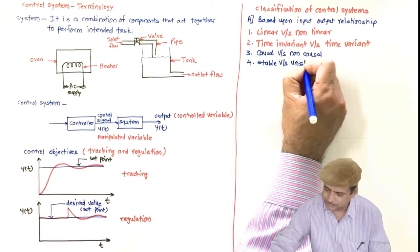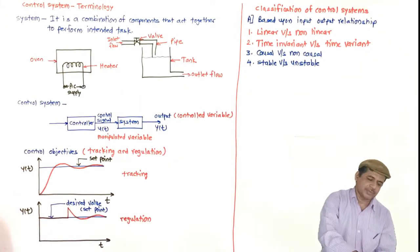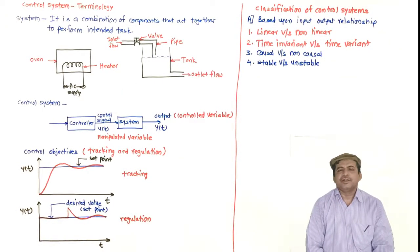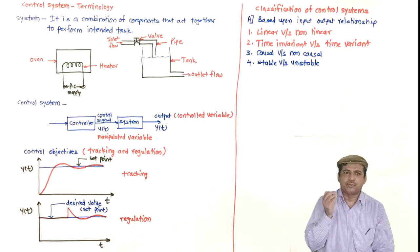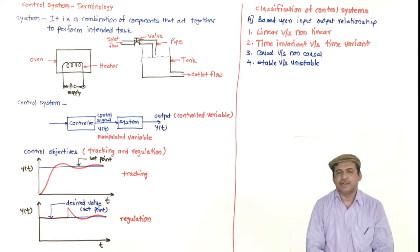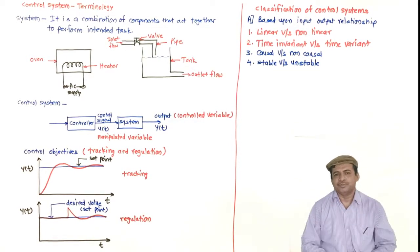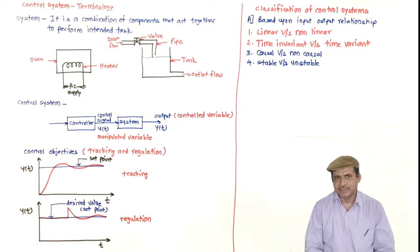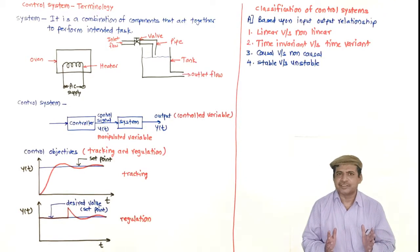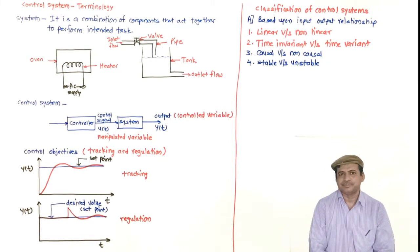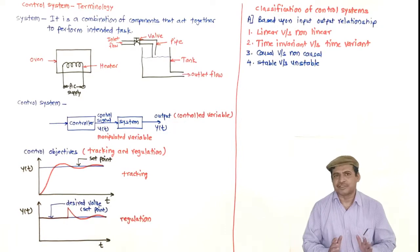Non-causal systems are not physically realizable. The next property concerns stability. A system is said to be stable if it produces a bounded output for every bounded input. It means that if we apply a bounded input — one with finite magnitude — to a system and the system produces an output that is also bounded, then the system is stable. Otherwise, it is unstable. A control system must always be stable; an unstable control system is not permissible.